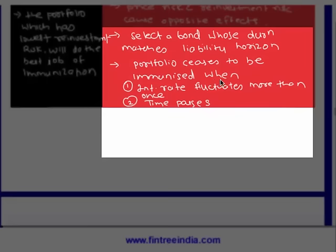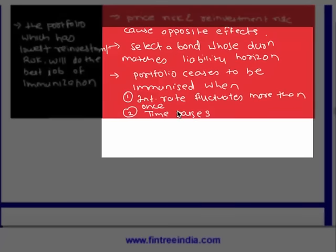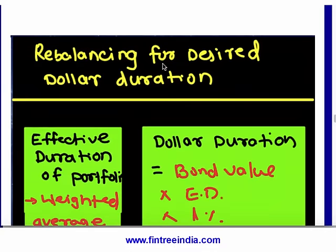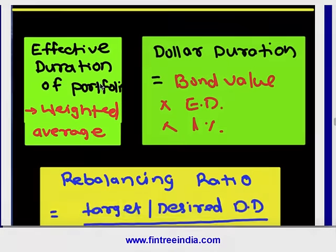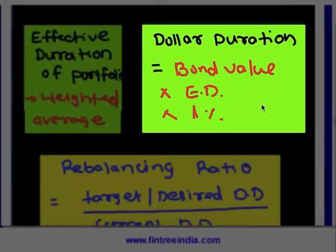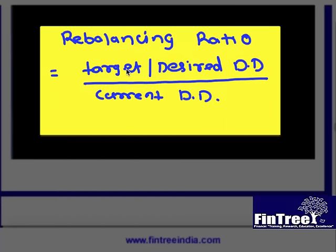The portfolio ceases to be immunized when interest rates fluctuate more than once, or as time passes — it works for only one shift in interest rates. The portfolio with the lowest reinvestment risk does the best job of immunization, meaning the best bond for immunization could be a zero coupon bond. For rebalancing to desired dollar duration: effective duration of a portfolio is simply the weighted average, dollar duration equals bond value times effective duration times one percent.